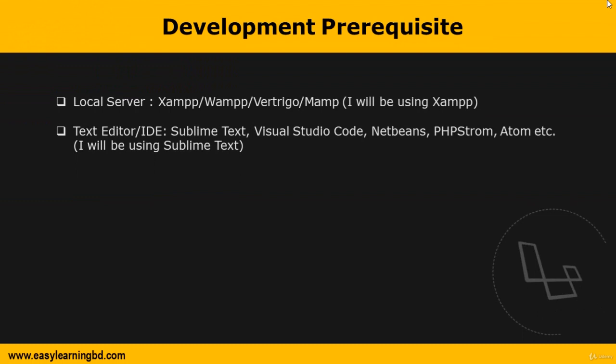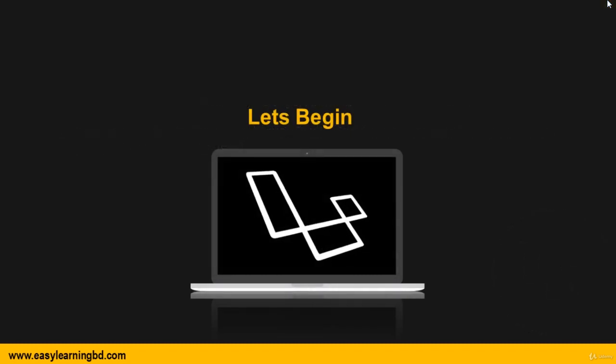For the course prerequisites, you will need one localhost server. You can use XAMPP, WAMP, Vertigo, or whatever you like, but I will be using XAMPP for the whole project. For development you will need a text editor or IDE like Sublime Text Editor, Visual Studio Code, NetBeans, PHPStorm, Atom, etc. All these editors are totally free software. I will be using Sublime Text Editor for this project. If you are ready, let's get started.